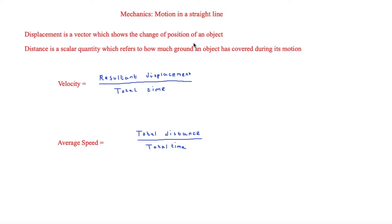Displacement is a vector which shows the change of position of an object. For example, if I was to walk 5 metres forward and then 5 metres back and I was in the same position at the end of it, my displacement would be 0. However, distance is a scalar quantity which refers to how much ground an object has covered during its motion. So if I use the same example of walking 5 metres forward and then 5 metres back, my distance would be 10 metres.